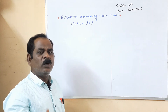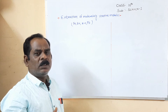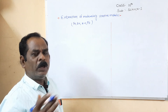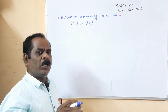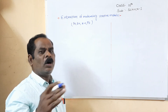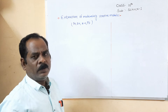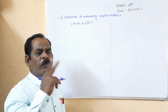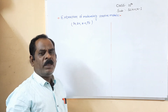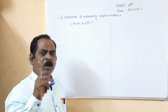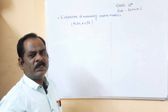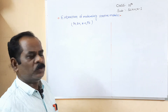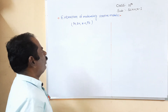Remember this important point: first, convert the sulfide or carbonate ore into its oxide by one of two methods — the first method is the roasting process, and the second is the calcination process.